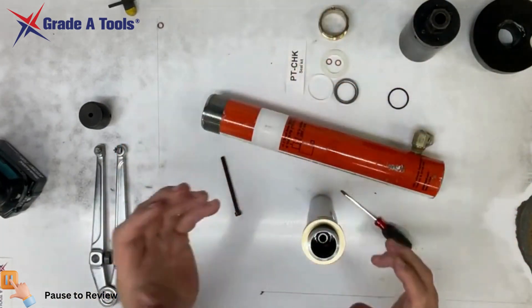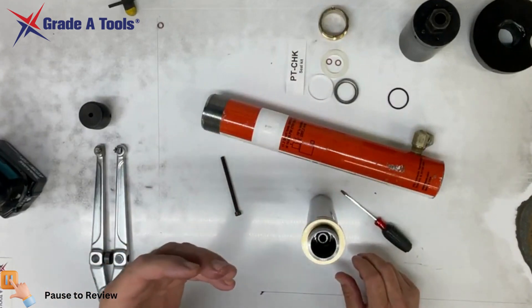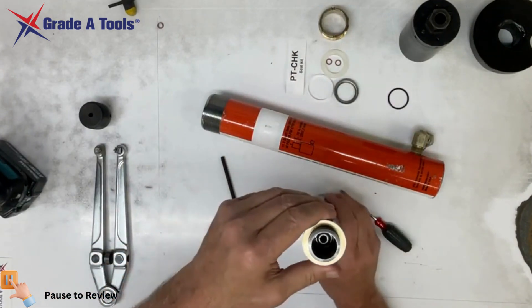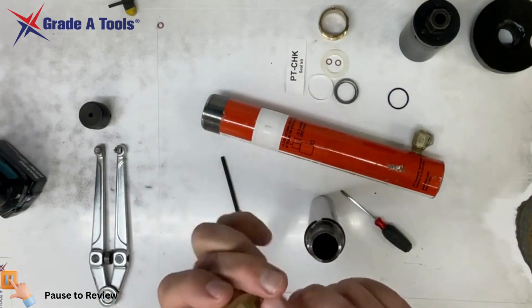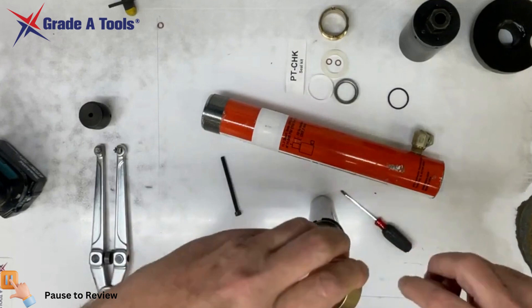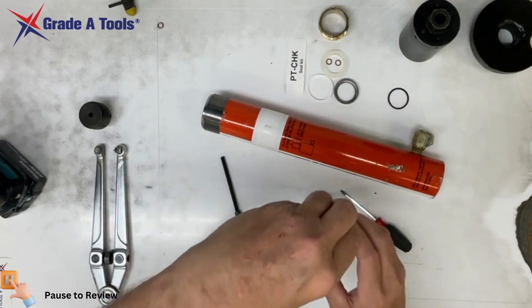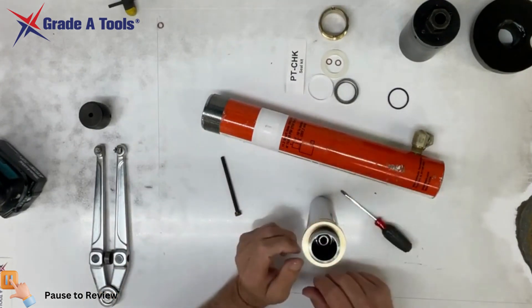You'll use your carburetor cleaner, brake cleaner, anything you can to wash and clean everything. Make sure always that this cut at the top face is down and that the smooth side is back on this side.